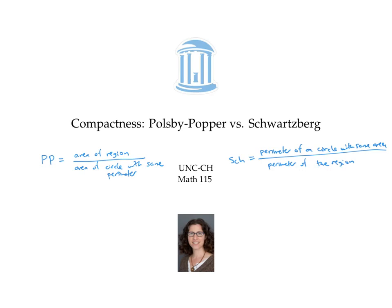Likewise, by calculating Polsby-Popper as the area of the region divided by the area of the circle, we always get a number between zero and one, because the circle is the shape with the largest area for its perimeter, and so the denominator will be bigger than or equal to the numerator.